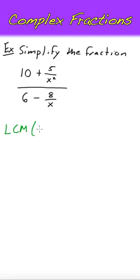First, we'll find the least common multiple of the denominators of the sub-fractions. Here, the LCM of x and x squared is x squared.